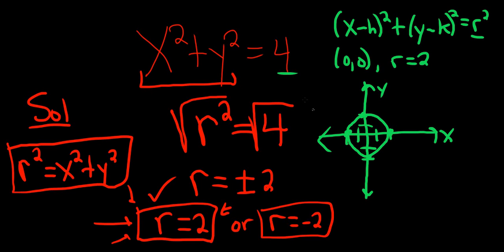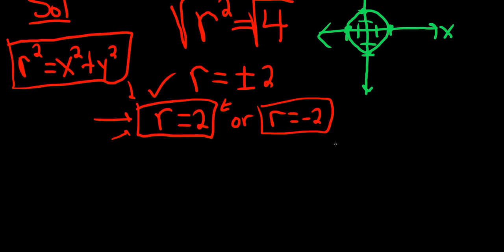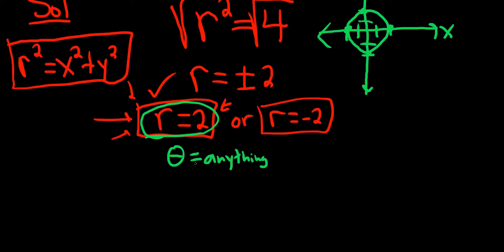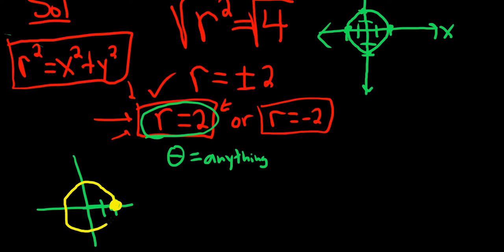Another way to graph this is to use the polar equation r equals 2. Remember, polar coordinates are given by (r, theta). Theta is missing from this equation, so theta can be anything. r is fixed at 2, so the end point of r traces a full circle as theta varies. That's why polar coordinates are nice — circles can be represented by very simple equations.